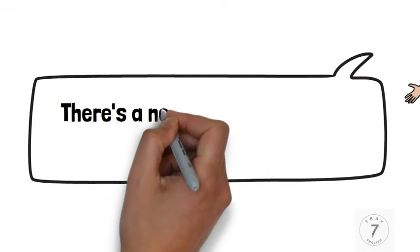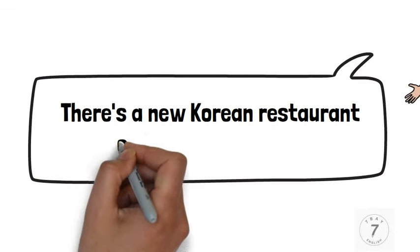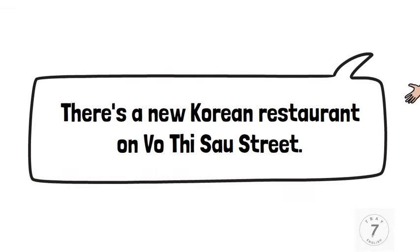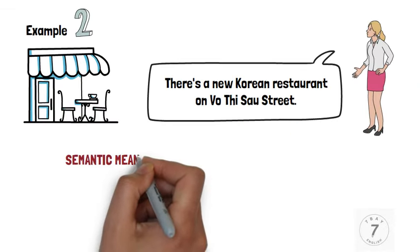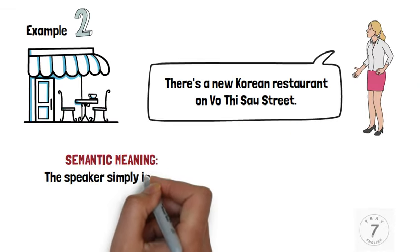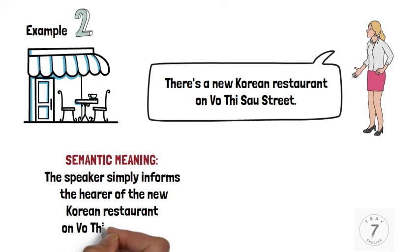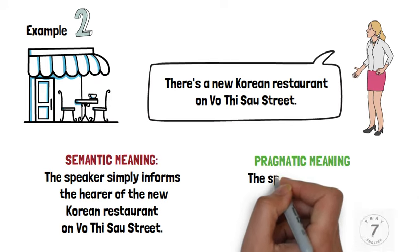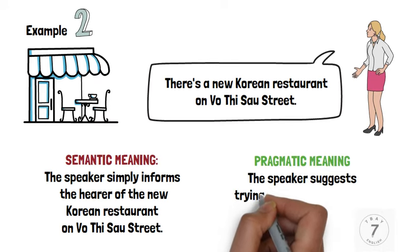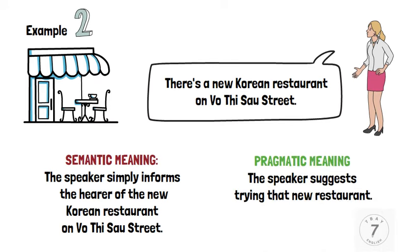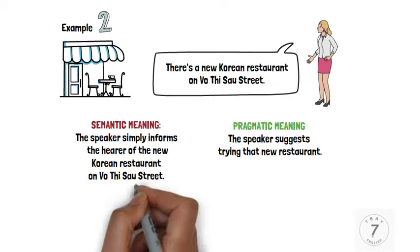Example 2: 'There's a new Korean restaurant on Votesau Street.' The semantic meaning is: the speaker simply informs the hearer of the new Korean restaurant on Votesau Street. The pragmatic meaning is: the speaker suggests trying that new restaurant.